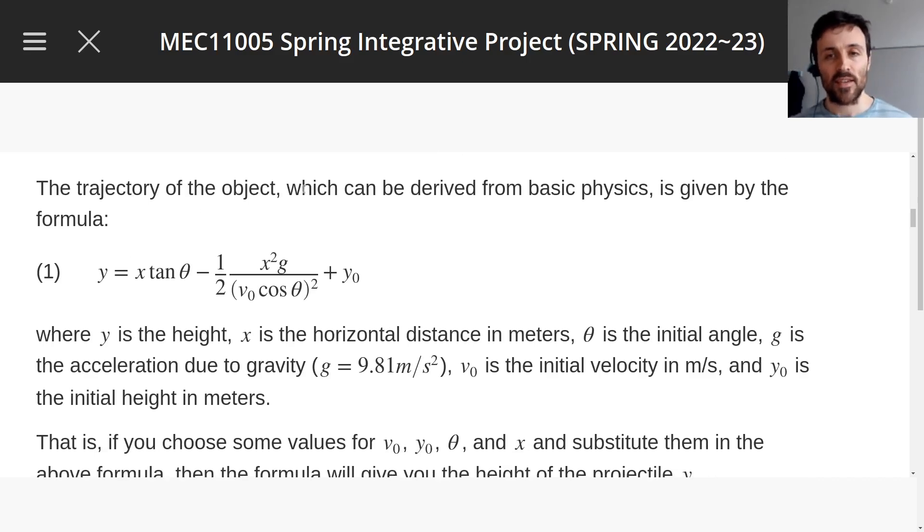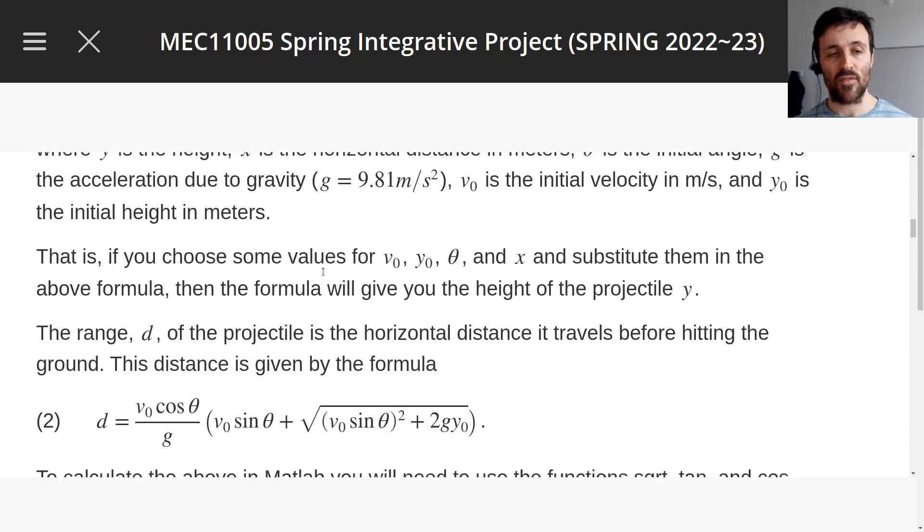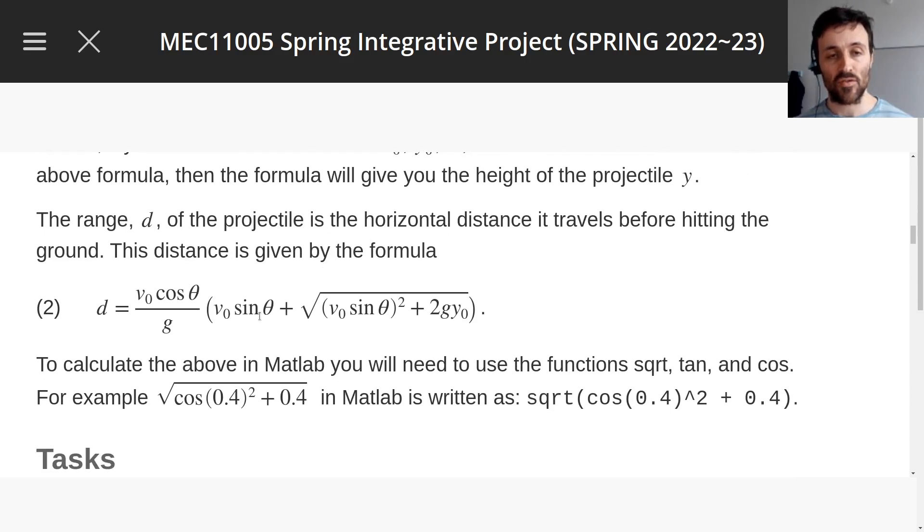Let's read together. The trajectory of the object can be described by this formula. This gives you, if you know the initial velocity v0 of your projectile, you know what angle you threw it at theta, and you know the initial height of the hill, then as you give different values of x, if you substitute all that into this right-hand side here, the left side will give you what height the rock was at different times. We can actually use this formula directly to calculate d, the horizontal distance it travels. You just need to set y equals 0 and solve. But we don't need to worry about that. Again, this is coding.